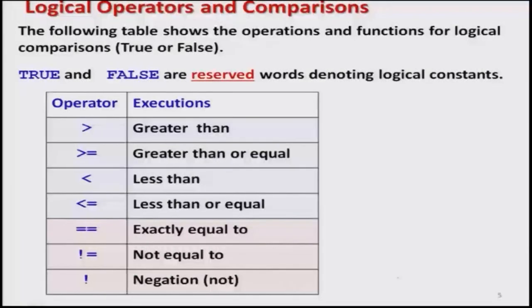For example, I would like to repeat a program until some condition such as x > 2 holds. These types of things can be accomplished using logical operators. We will first understand the different logical operators available in R and then see how to use them. Before going further, we must keep in mind that TRUE and FALSE — written in capital letters — are reserved words in R programming. Please do not use the words TRUE or FALSE to name any variable; they are reserved for R programming.